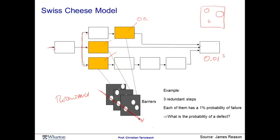So in order for the defect to happen here at the end, all three of them have to go wrong. We can then define the yield of this process as 1 minus 0.01 raised to the power of 3.